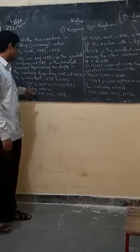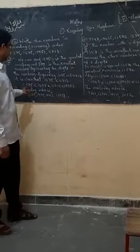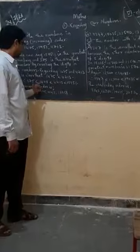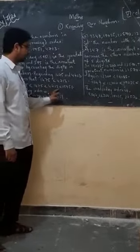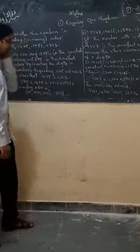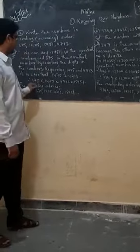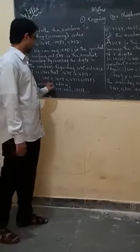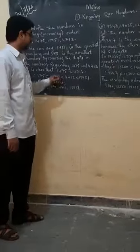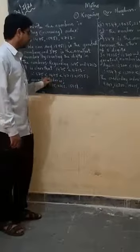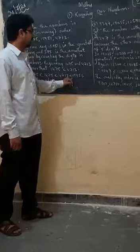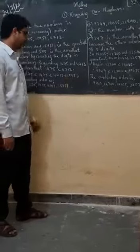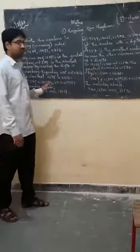Therefore, 375 is less than 1475, less than 4713, less than 15935. So what can you tell? 375 is less than 1475, 1475 is less than 4713, less than 15935. So we can tell this is the order from smaller to bigger.